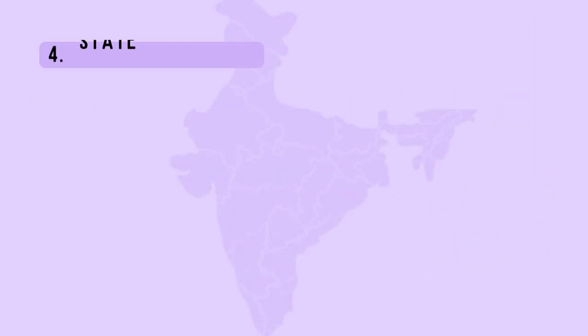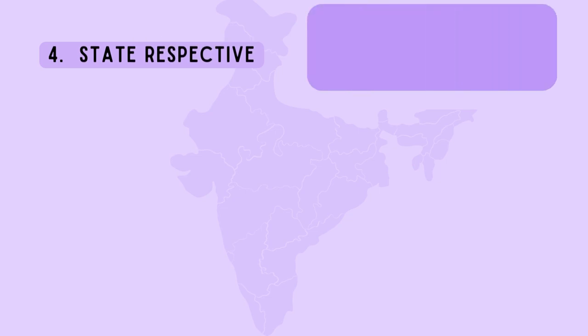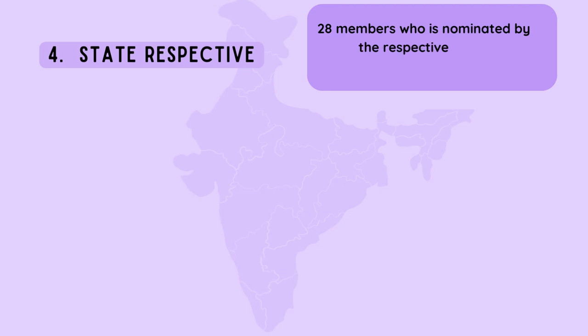India has several states — 28 to be precise — and each state is represented in the DCI by a member who is nominated by the respective state government.